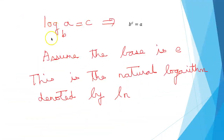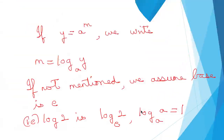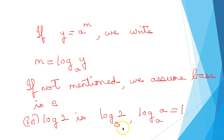Log a to the base b equal to c implies b raised to c equal to a. In normal problems we assume the base is e, and when the base is e it is a natural logarithm denoted by ln. If y equals a raised to m, we write m equal to log y to the base a. Log 2 is the same as log 2 to the base e — if not mentioned, we assume the base is e. Log a to the base a is 1, so any number to the same base has log equal to 1.